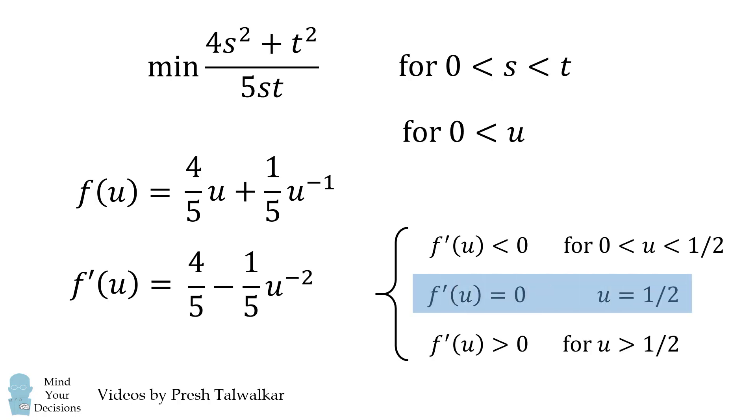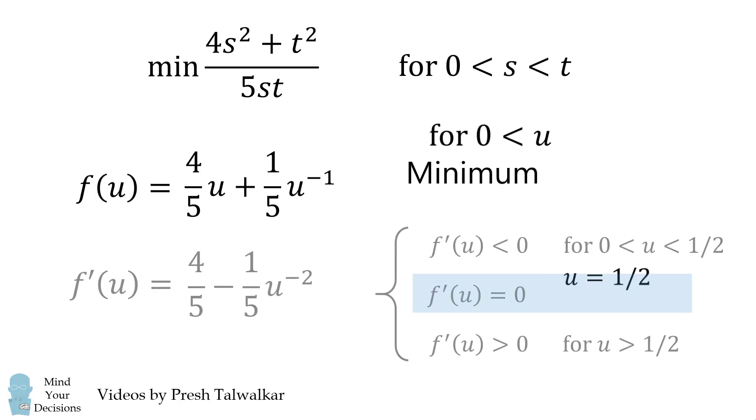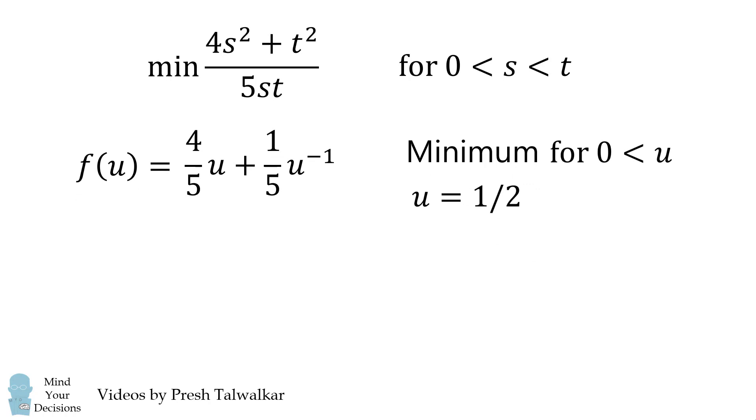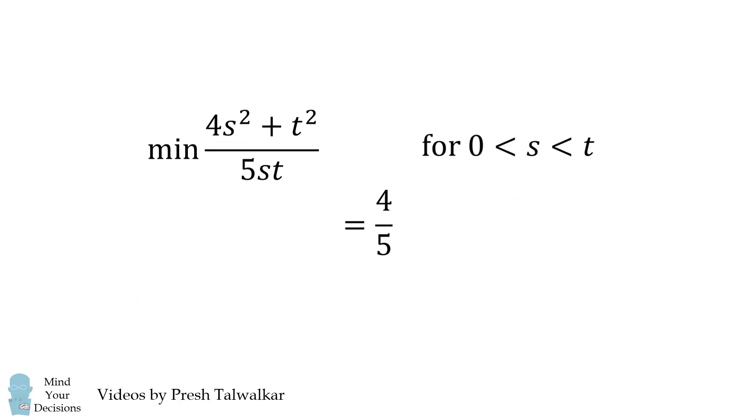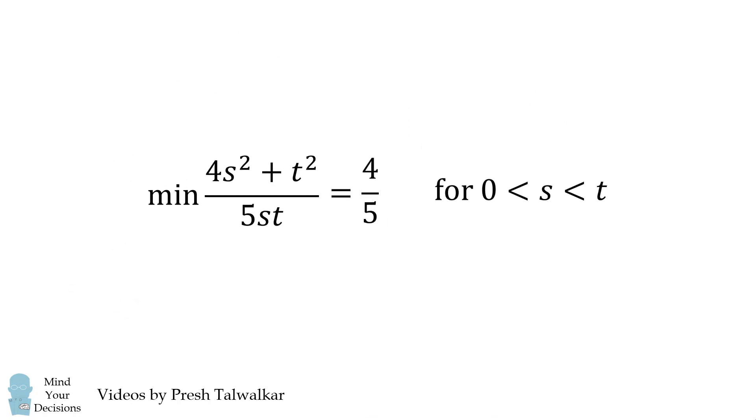Altogether this means the function f has a minimum at u equal to 1 half. Therefore, we substitute that value back in and we get the answer which is 4 over 5. And this will minimize the function that we want. So the answer is 4 over 5.